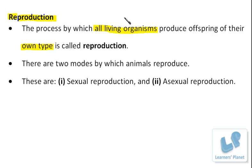These organisms are able to produce offspring — the young ones which are produced are known as offspring — of their own type. This is something very important when defining reproduction. It is never possible that a particular species can produce a different type of organism. Dogs will never produce cats. Human beings will never produce monkeys. So whatever type of organism is reproducing, the young one produced is going to be of their parental type only.